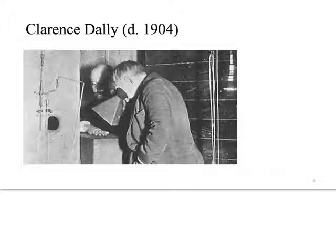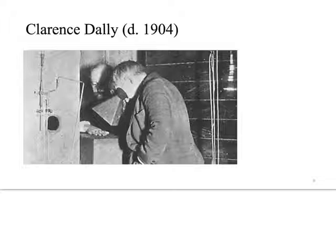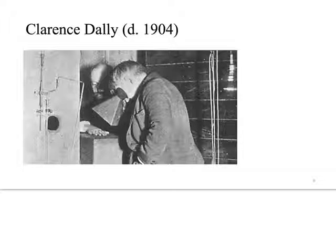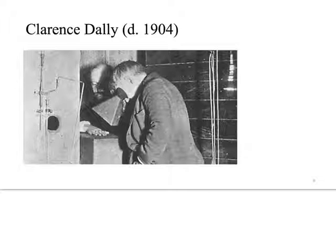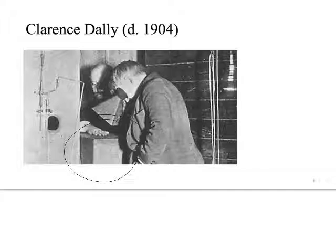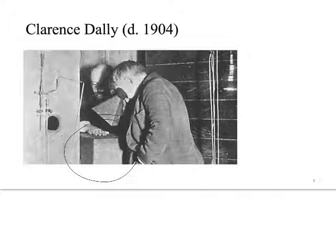Clarence Daly, in 1904, becomes the first known radiation casualty. There probably was some caveman who fell into a uranium cave, but the first documented one is Clarence Daly from working with Thomas Edison on the fluoroscope. Edison would have him hold his hand over the box while he was working on the development of the machine, and Daly experienced acute radiation effects that eventually led to his death.